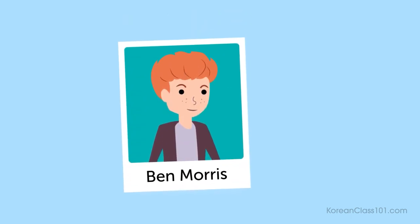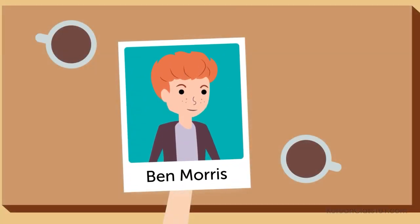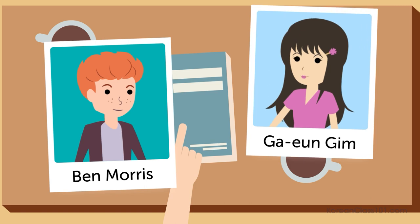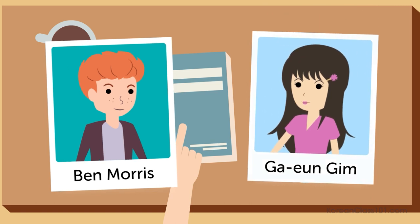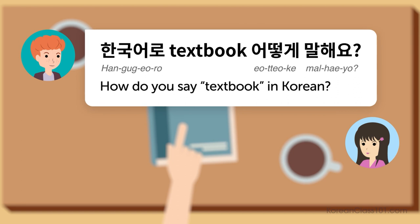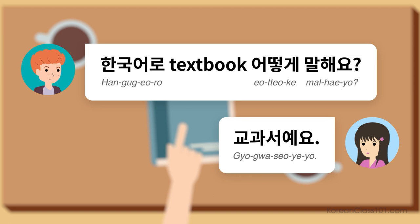This is Ben Morris, and he's at a cafe doing a language exchange with his classmate, 가은 김. It's the Korean portion of the exchange, and he points at the textbook and asks, 'How do you say textbook in Korean?' Listen to the conversation and focus on the question. The conversation is between two young adults of the same age, so the politeness level is informal polite.